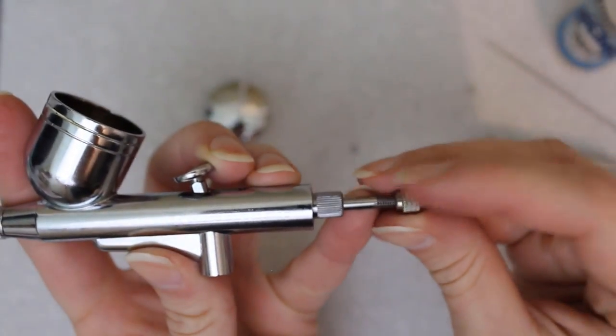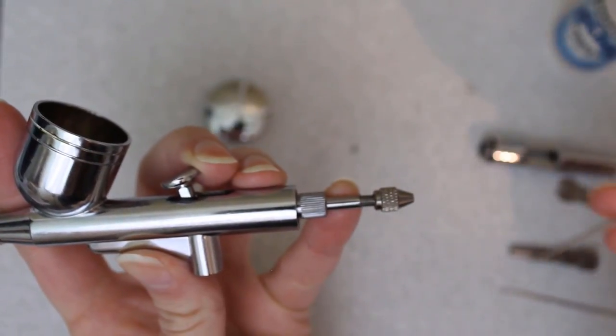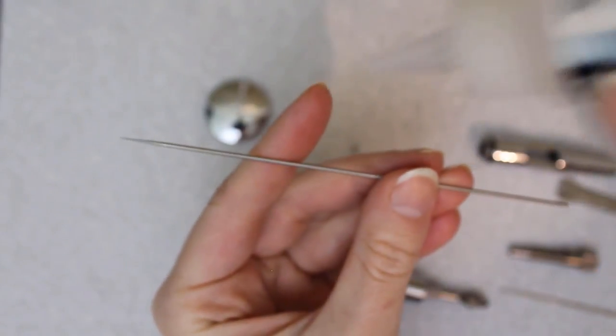Now that the nozzle is together, we're ready to insert the needle. The needle chucking nut goes on the back of the chucking guide. Turn it once or twice, not enough to tighten it yet, just to get it where it belongs.